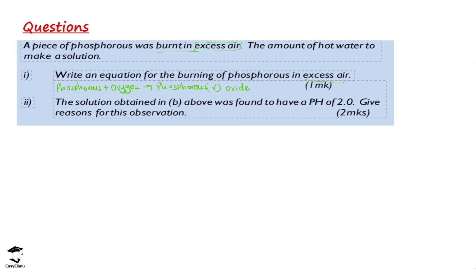The next question: the solution obtained above was found to have a pH of 2. Give a reason for this observation. When you take the product, which is phosphorus pentoxide, and dissolve it in water, it forms phosphoric acid. This acid has a pH of 2, which means it is a very strong acid.